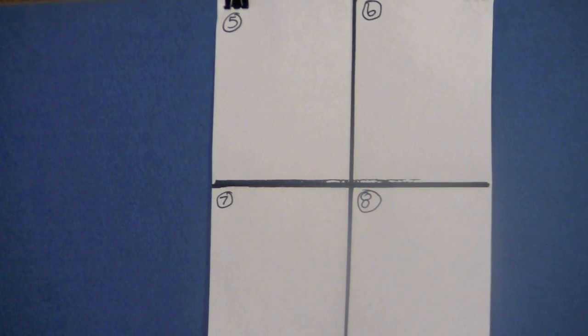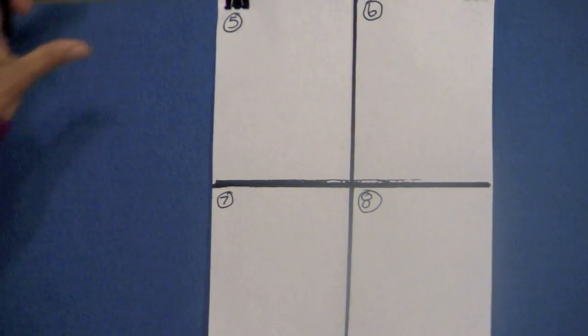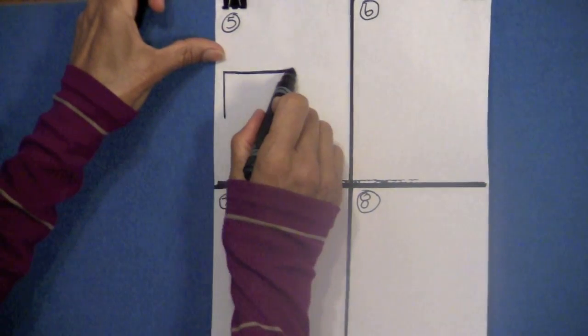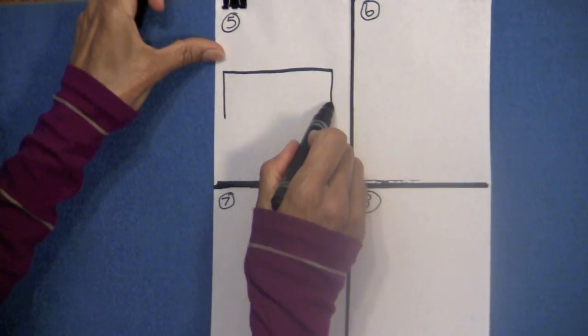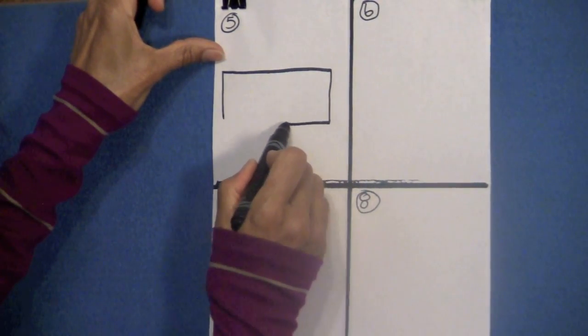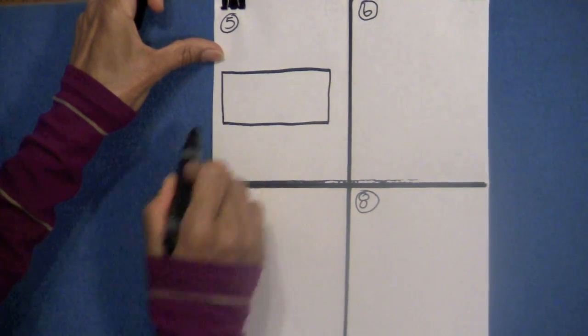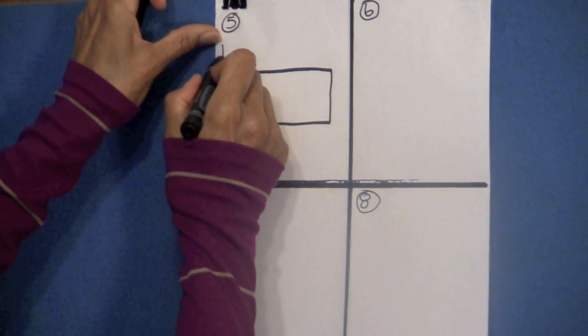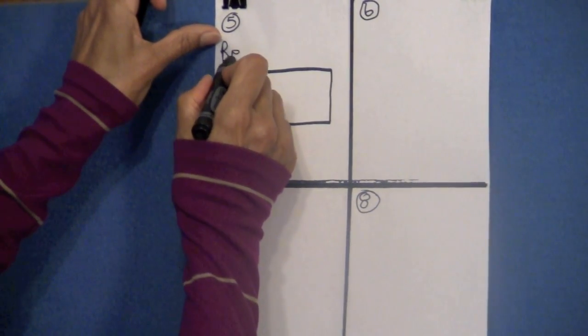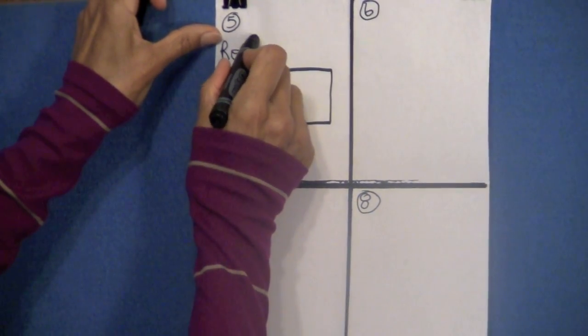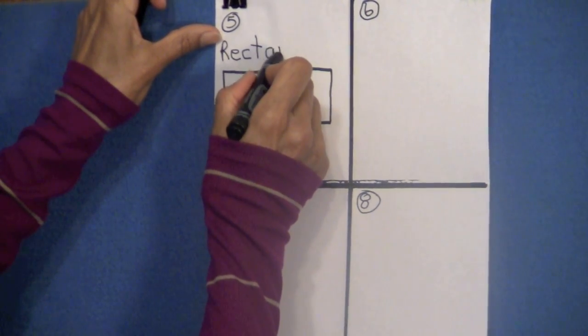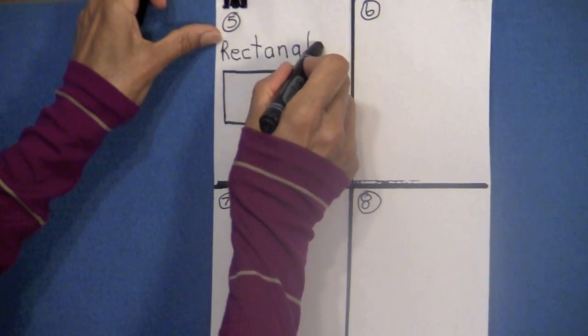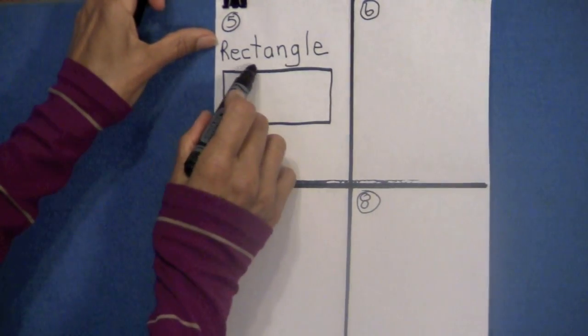Let's start in box number five. I want you to draw a rectangle. Rectangle has two equal sides. There's the rectangle. And how do we spell rectangle? Capital R-E-C-T-A-N-G-L-E. Rectangle.